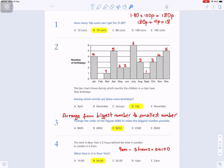Question number two: This bar chart shows during which months the children in a class have their birthdays. During which month are there most birthdays? Go to the bar chart and find out how many birthdays - January has four, March one, April five, May two, June two, and so on. During which month are there most birthdays? You'll see that July has got six birthdays, which is most.